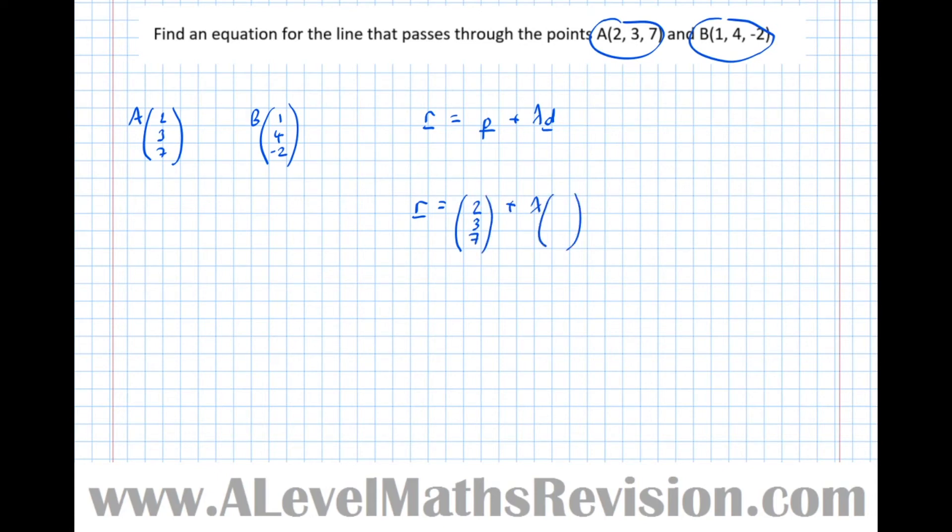And then we need a direction. Well, the direction of the line is just AB, i.e. what we do to get from A to B. Or we could use BA or any multiple of AB or BA. So AB is B take A, which is equal to: 1 take 2, 4 take 3, and minus 2 minus 7. Which is equal to, well, 1 minus 2 is minus 1, 4 minus 3 is 1, and minus 2 minus 7 is minus 9.